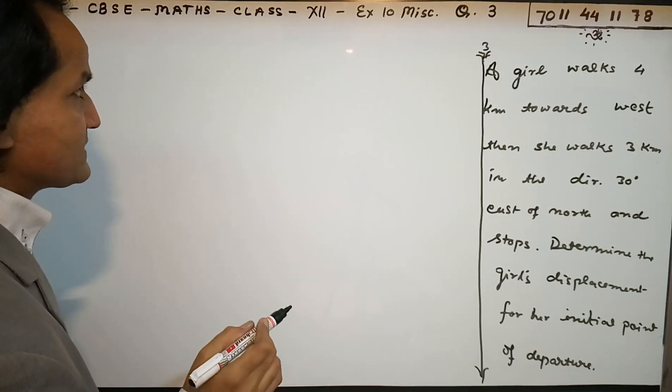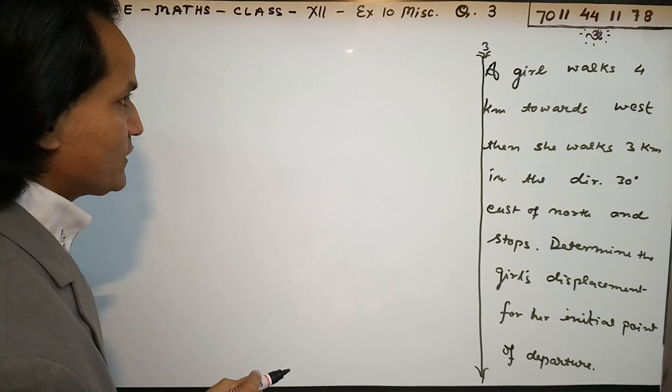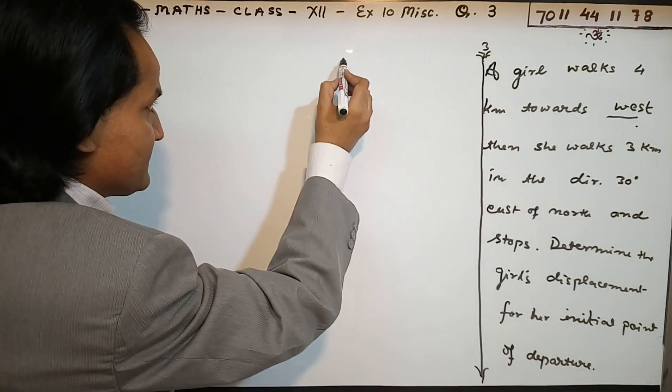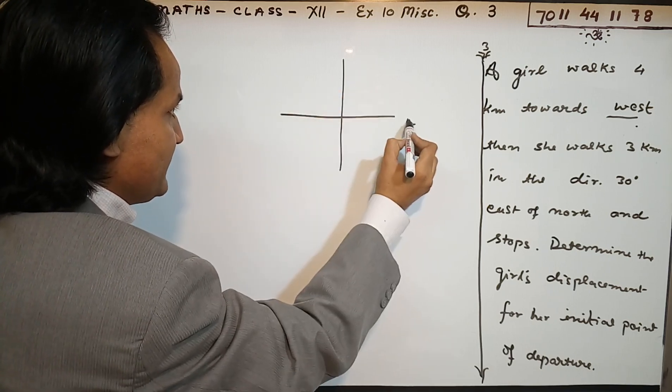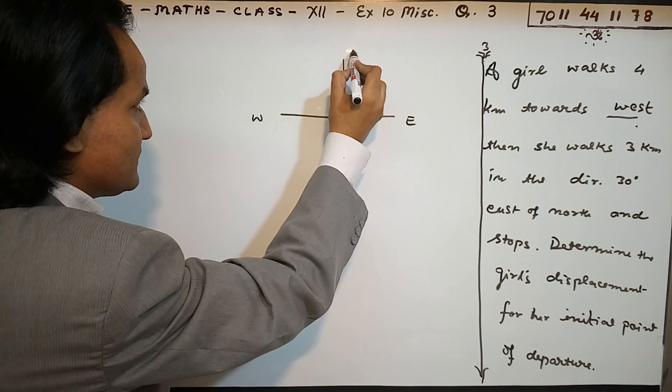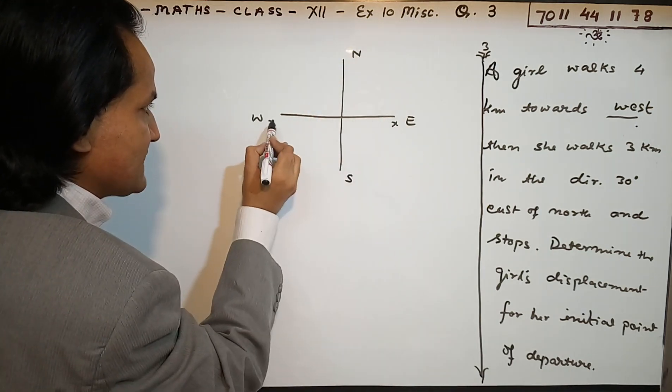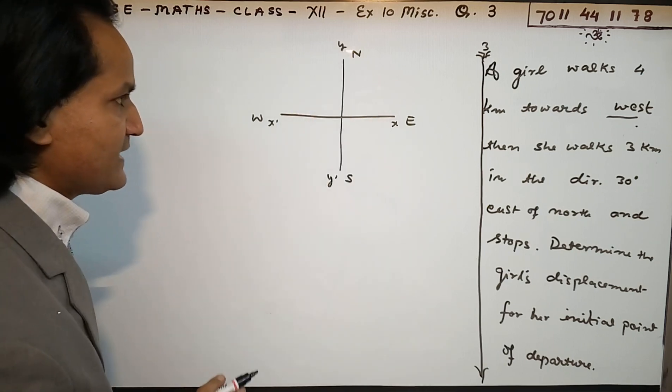Now we are starting question number three from Exercise 10 Miscellaneous, Class 12. A girl walks 4 kilometers to the west. I can project here all the directions - east, west, north, and south - with x-axis, y-axis. Our point of origin is at the exit.